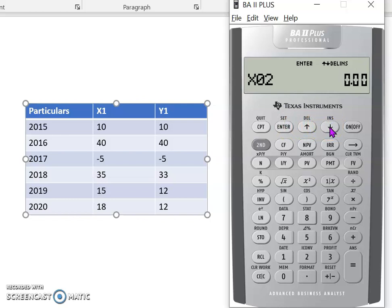Now the calculator prompts me for X2. X2 being 40, so that goes 40, enter, down arrow key. And Y2 is also 40, so 40, enter, down arrow key.